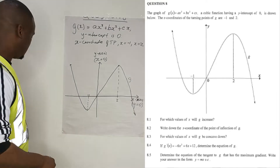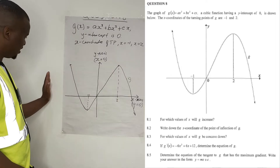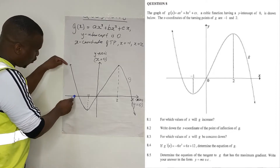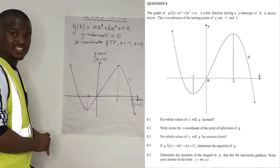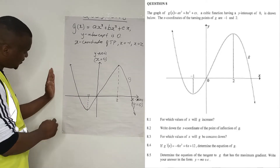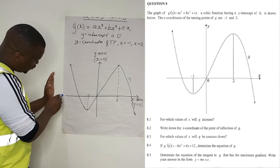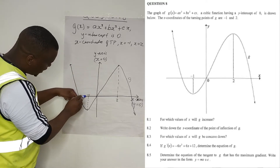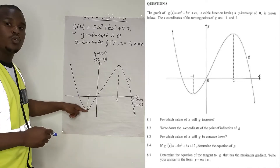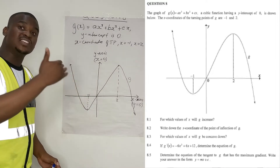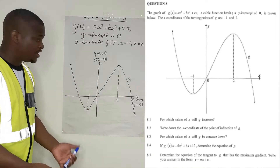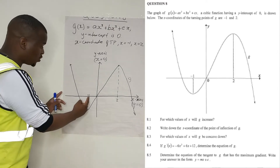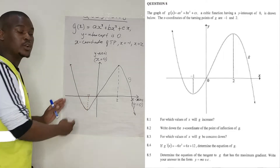So let's say we start from minus infinity to minus 1. You are increasing your x values in that direction, but your corresponding y values are decreasing. They are decreasing up until there. So when you increase your x values and the y value decreases, then your function is decreasing. As a result, your graph is decreasing on the interval from minus infinity to minus 1.